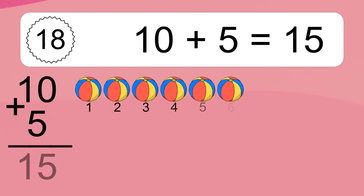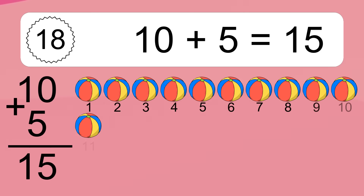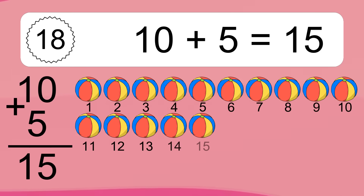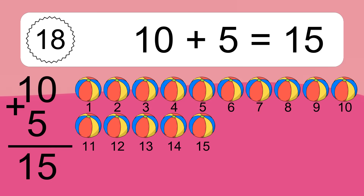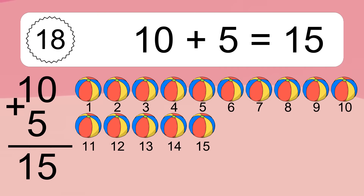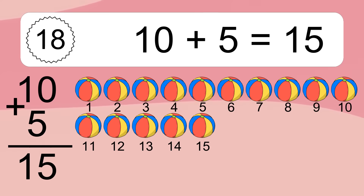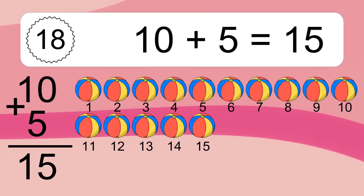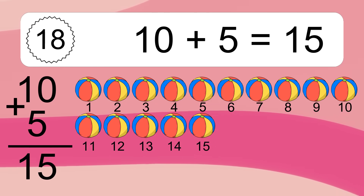10 plus 5 equals what? 10 plus 5 equals 15. Let's count it: 1, 2, 3, 4, 5, 6, 7, 8, 9, 10, 11, 12, 13, 14, 15.